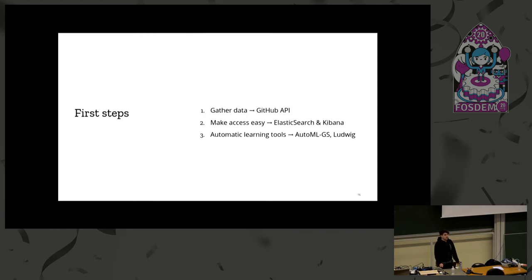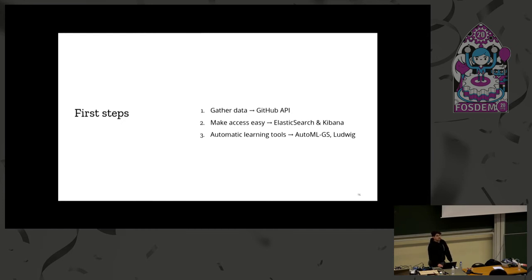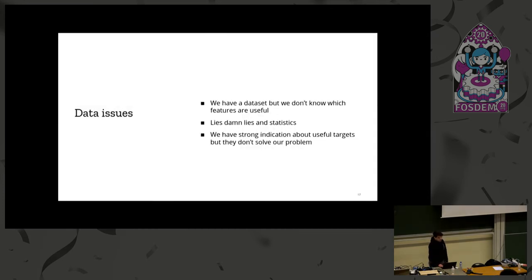After figuring out what we needed to achieve and how data looked, we did some research and found a big ecosystem around automatic machine learning tools. Two of the most popular ones are Ludwig from Uber — which uses TensorFlow to build deep learning models based on just a CSV — and AutoMLGS, which does pretty much the same in a more scrappy way. We found that even with basic tooling and basic machine learning models, we got some decent results — and the basic accuracy we got was probably good enough.